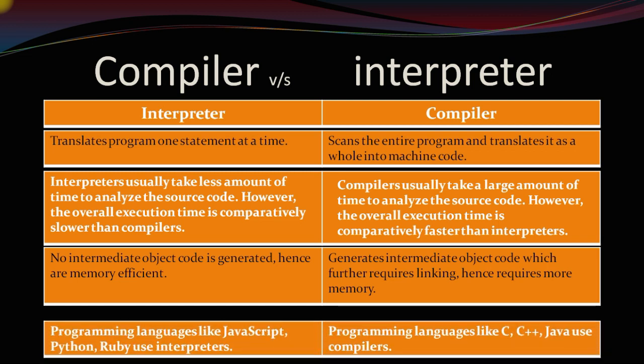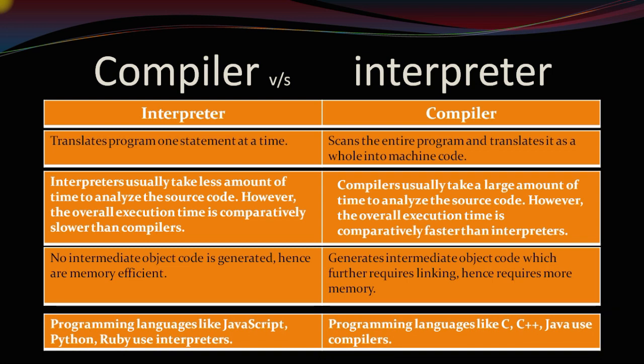So, which programming languages use a compiler and which use an interpreter? Python, Ruby, and JavaScript use interpreters. Whereas C, C++, and Java use compilers.